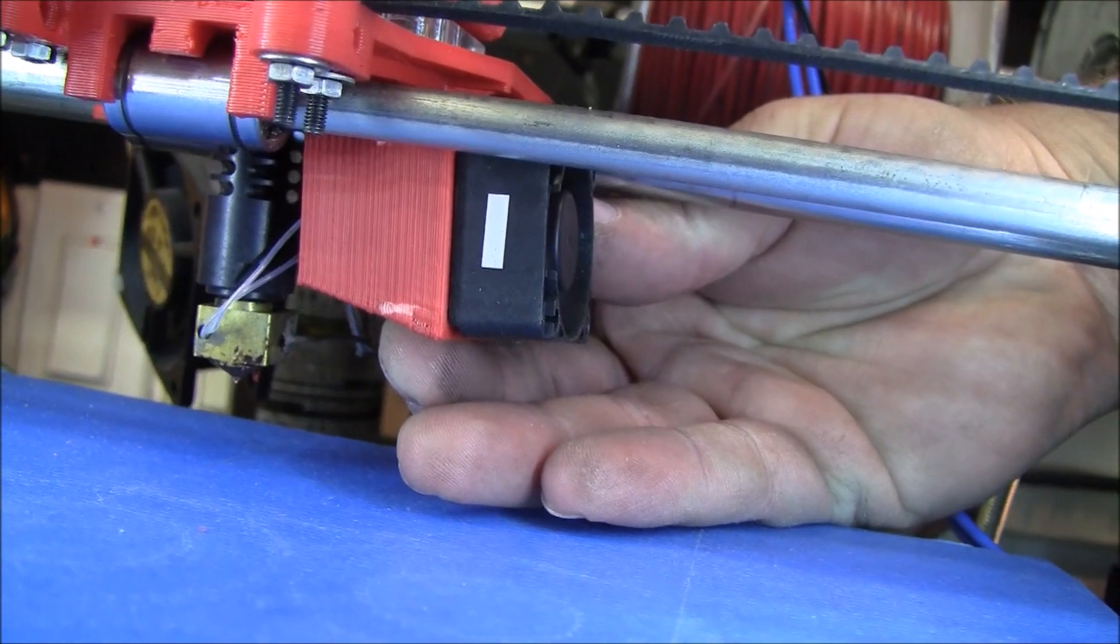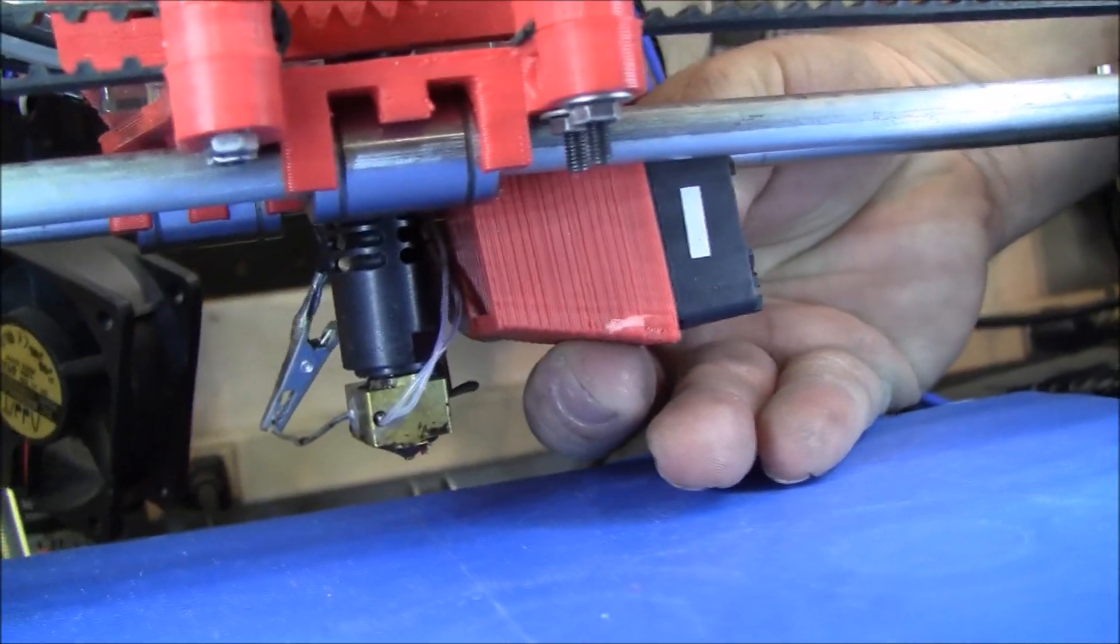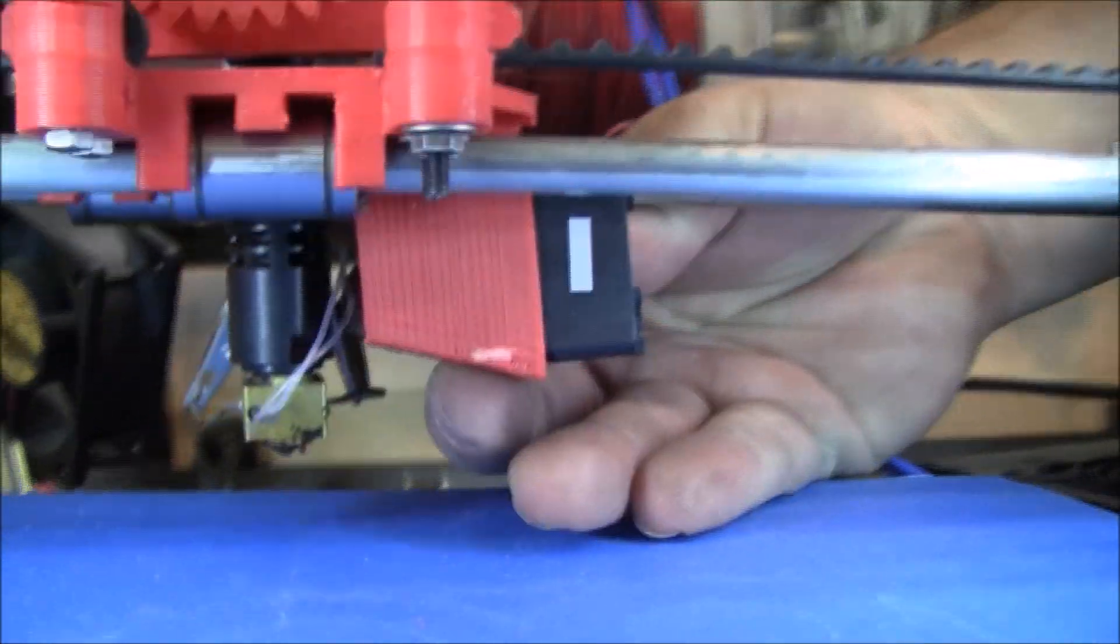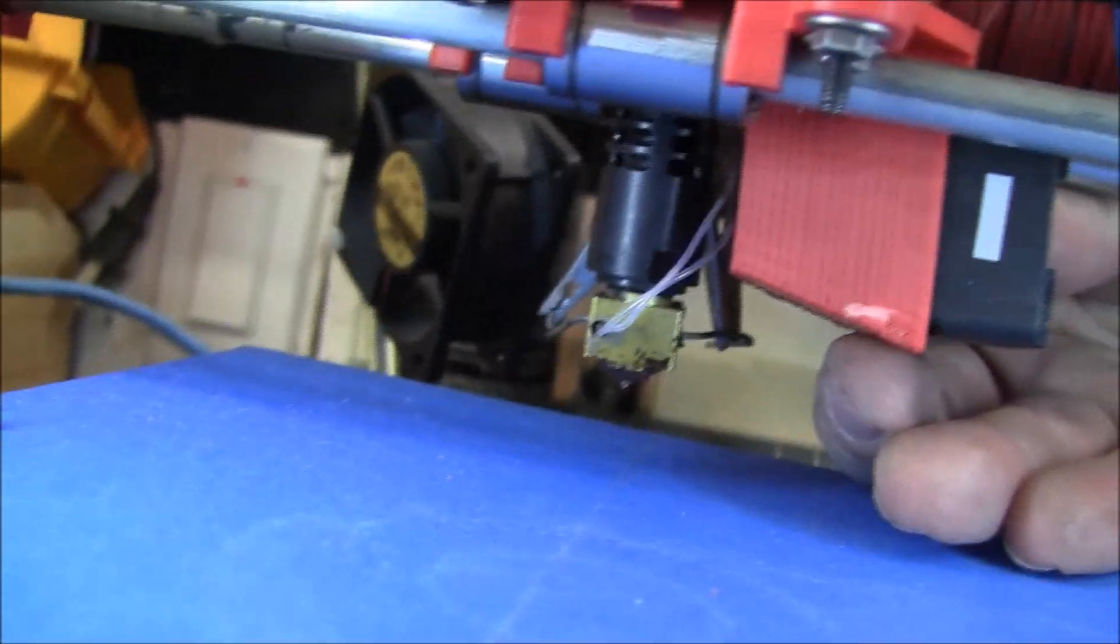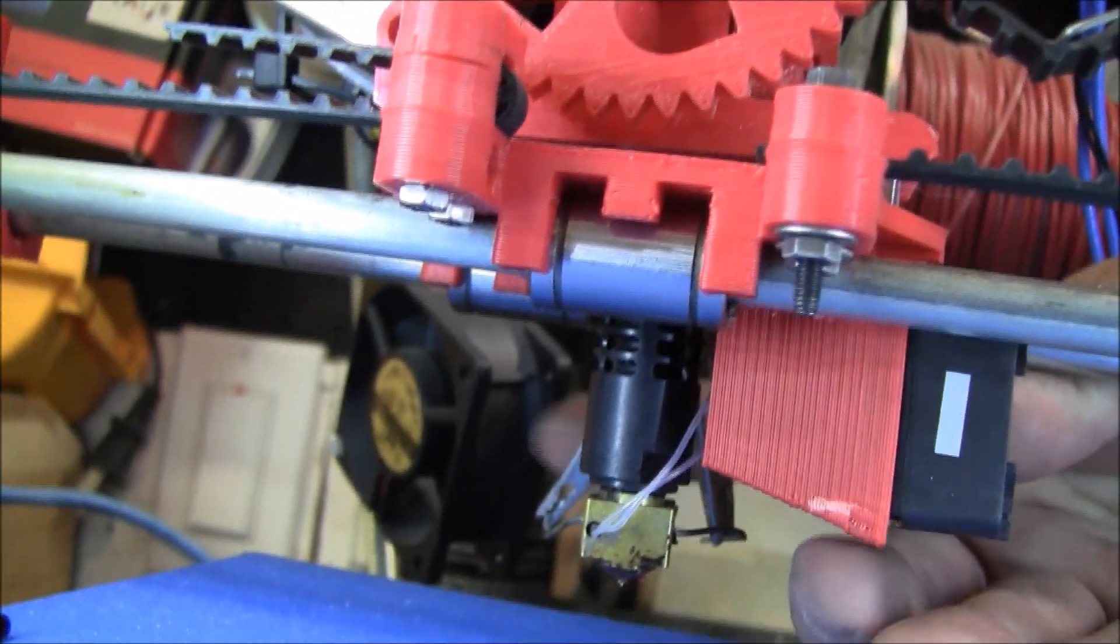So I want to show you this cooling shroud I built that will force the air to go right towards the hot end, the cooling part there. This will help prevent jams and keep this thing as cool as possible.